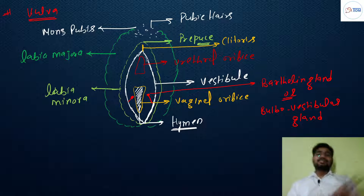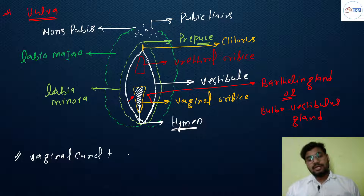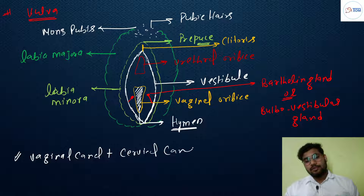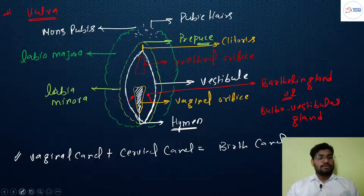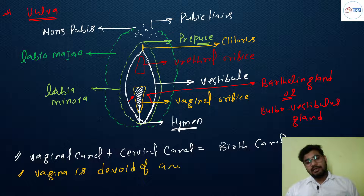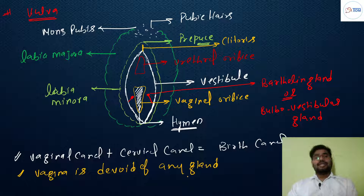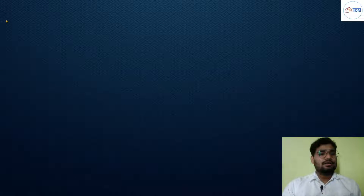To summarize the external genital structure: the vaginal canal plus the cervical canal together act as a birth canal. The vagina is devoid of any gland and is lined by non-keratinized epithelial tissue.